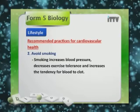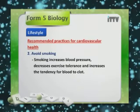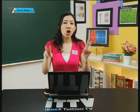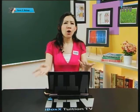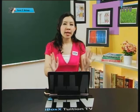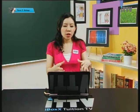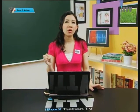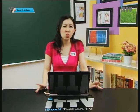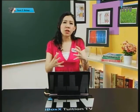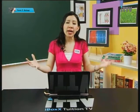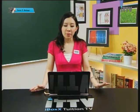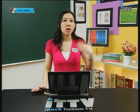Avoid smoking entirely. Smoking increases blood pressure, decreases exercise tolerance, and increases the tendency for blood to clot. It is not about controlling smoking but avoiding it — don't start the habit, and if you already smoke, try to quit. Smoking gives only disadvantages with no advantages and fundamentally contributes to cardiovascular diseases.